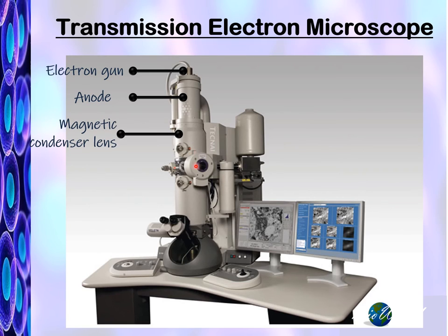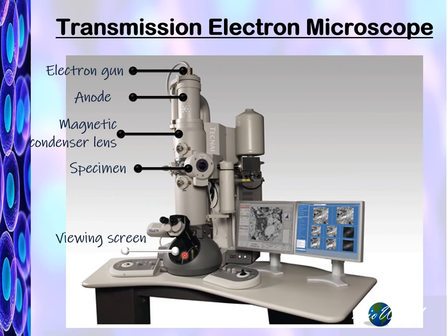This circle here is where we will insert the specimen that we want to observe. And right at the bottom here is what we call the viewing screen, so the researcher can look into this viewing screen. But the actual image of the specimen will be displayed here on the computer screen.